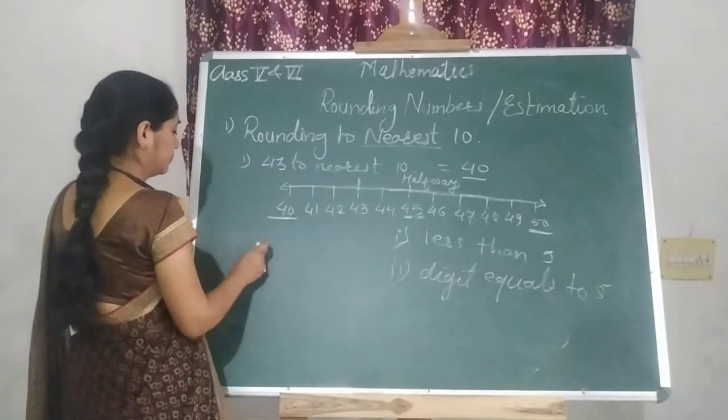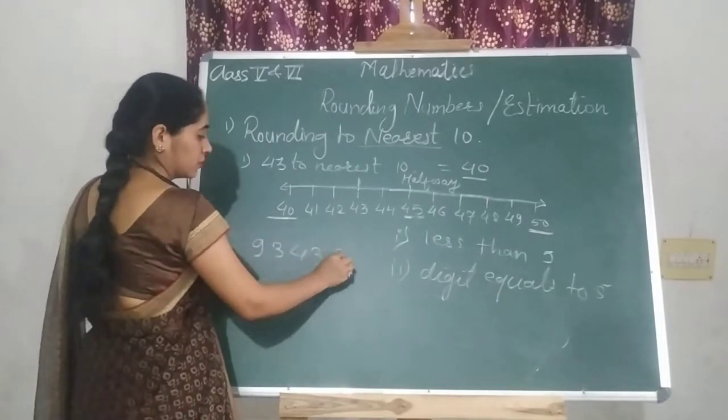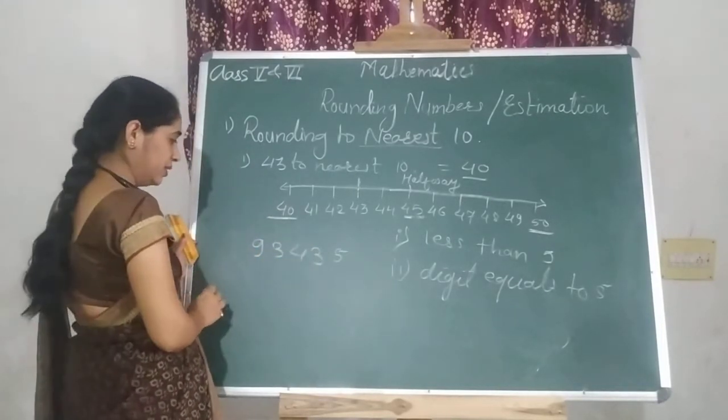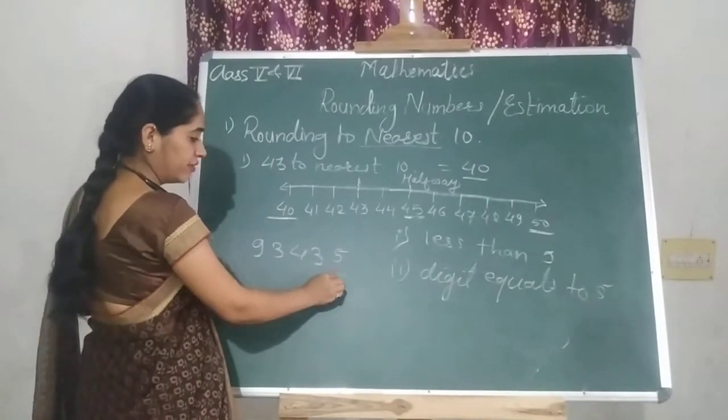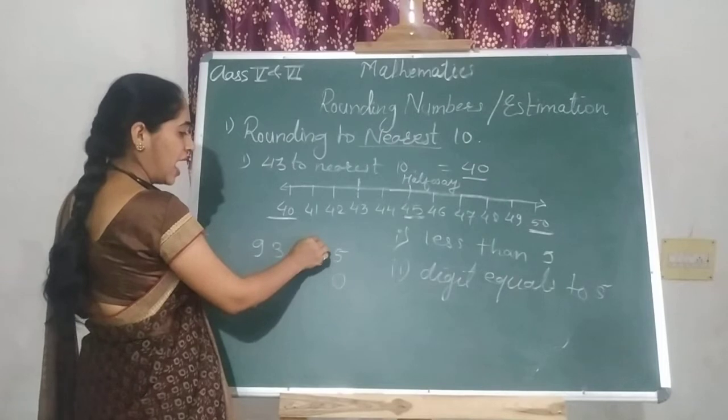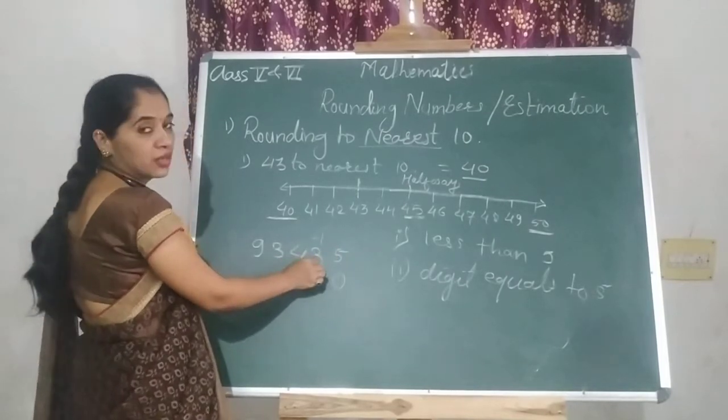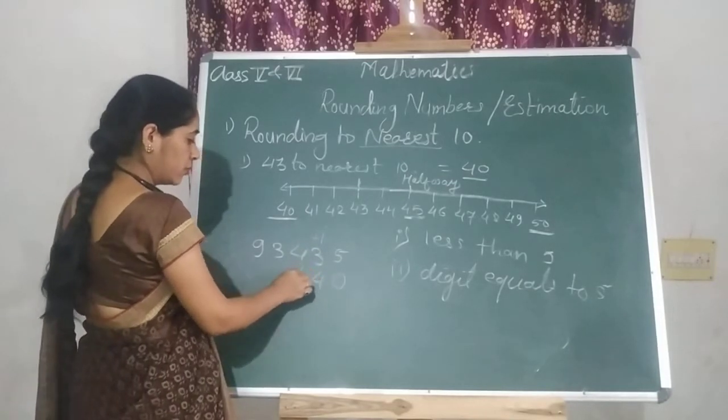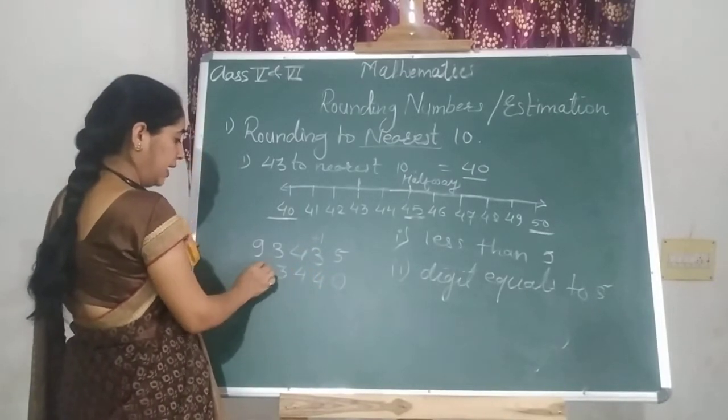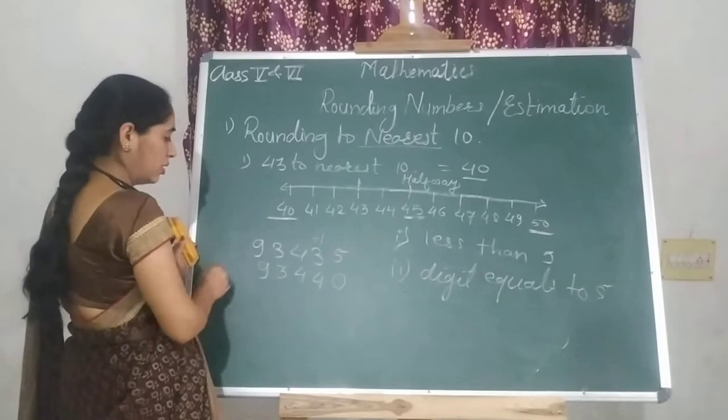See one more example. So as rule says, replace the 5 by 0 and add 1 to its nearby place, which is bigger. So this is 4439. This is your answer.